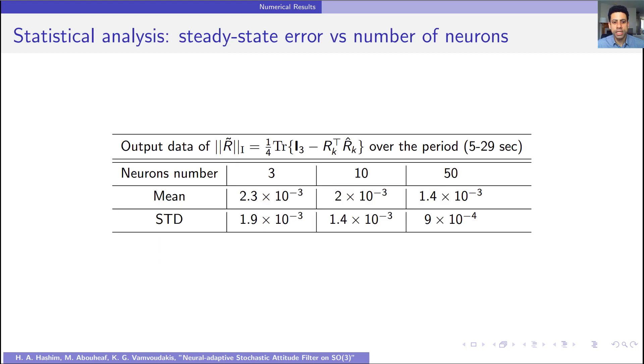This table shows statistical analysis of mean and standard deviation of the steady state error between 5 to 29 seconds with respect to various numbers of neurons. As illustrated by this table, greater number of neurons result in improved steady state error convergence, but as we said earlier, with more computational power requirements.